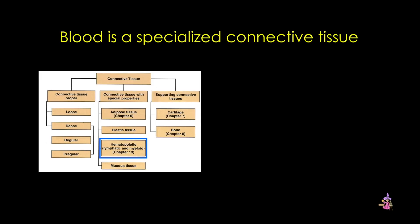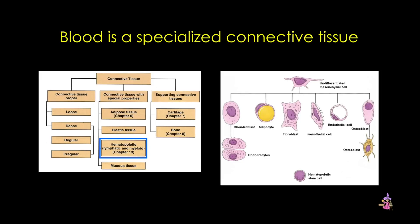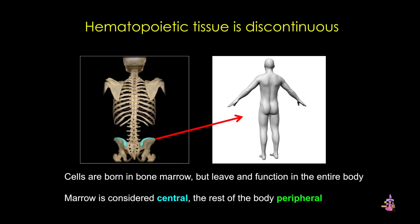Histologically, blood is considered to be a specialized connective tissue, since it arises from mesoderm or undifferentiated mesenchymal cells — those same cells that give rise to adipose tissue, chondroblasts, and osteoblasts. Hematopoietic tissue, or blood, is also considered to be discontinuous. That is, it's produced in one tissue but functions elsewhere. In this case, cells in the adult are born in the bone marrow but function throughout the body. Marrow is considered central, while the rest of the body is peripheral, and these terms are important for pathology.